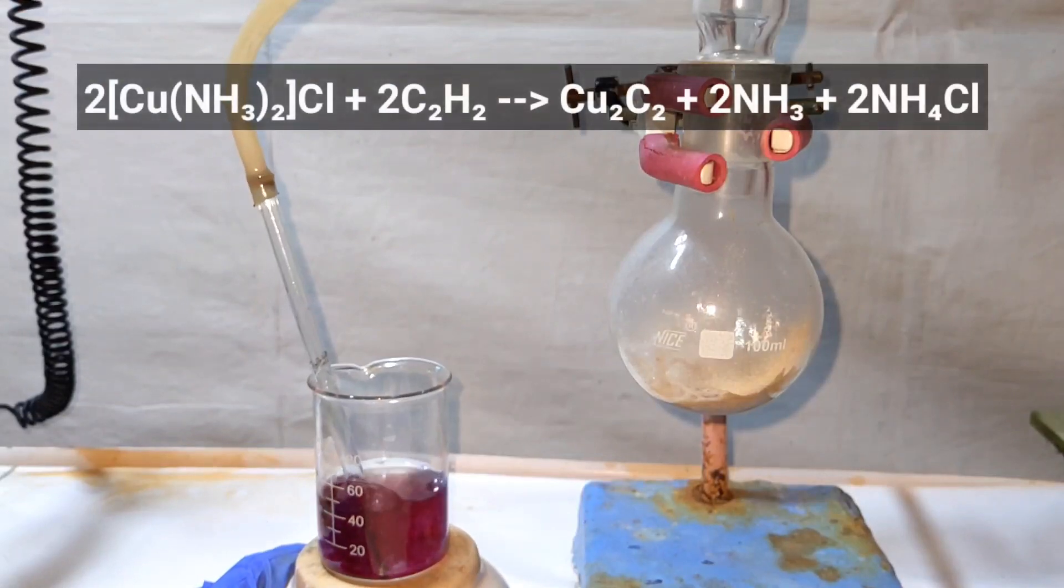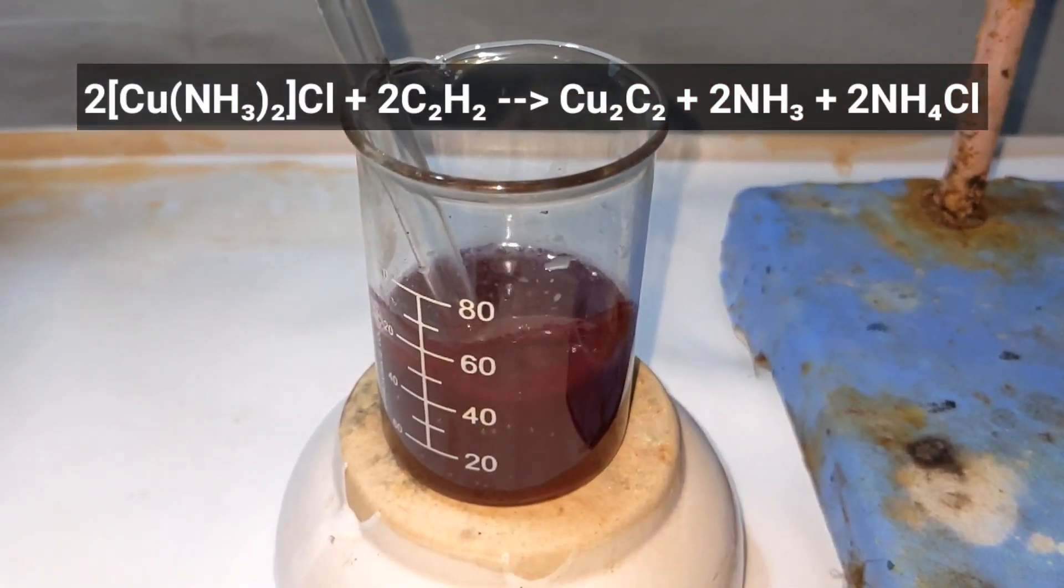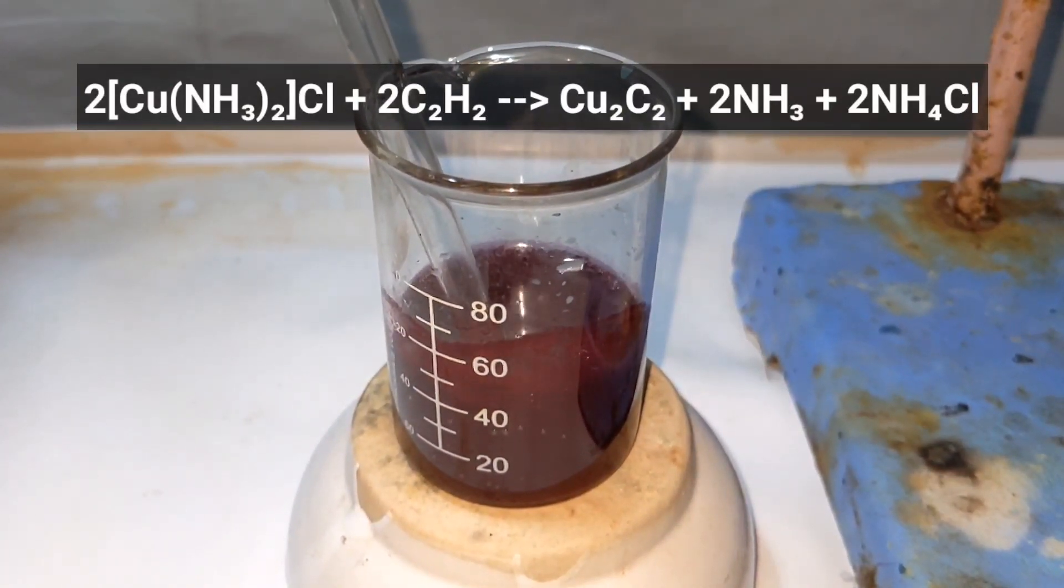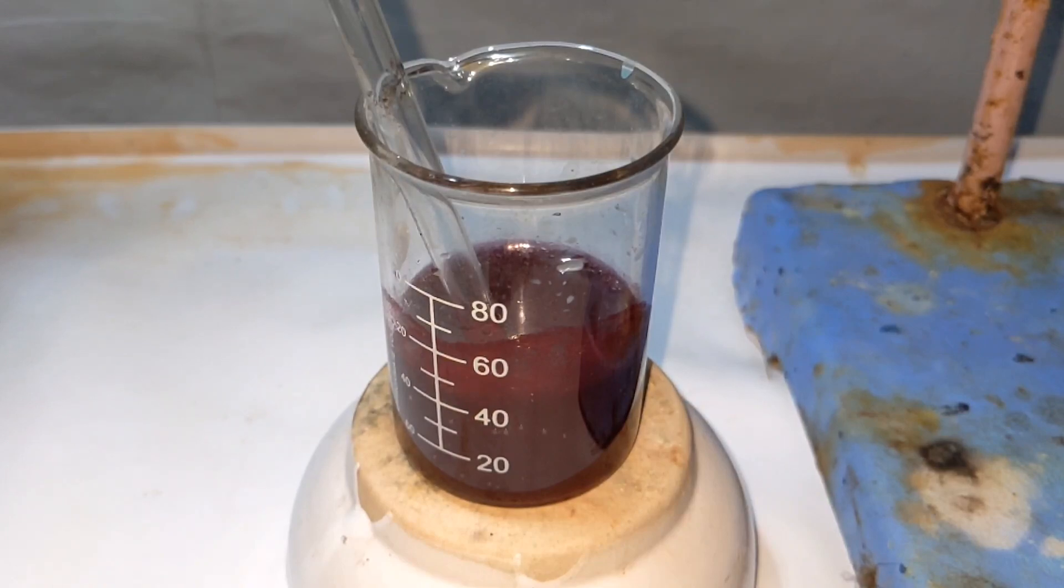Immediately you see a red colored precipitate forming, and that is copper 1 acetylide. Allow the acetylene gas to pass through the solution for a few minutes so that the reaction is complete. It has a pretty deep red color to it.